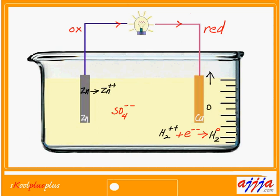One more very important thing: the left-hand side, where oxidation happens, we call the anode. The right-hand side we call the cathode. Here's how I remember it: oxidation and anode both start with vowels — O and A. Reduction and cathode both start with consonants — R and C. Keep vowels together and consonants together.